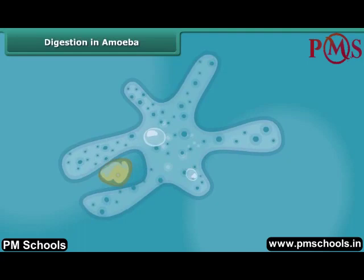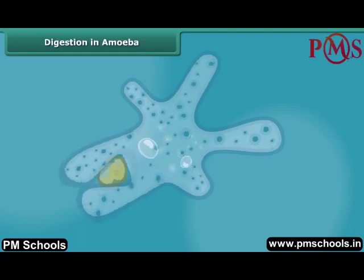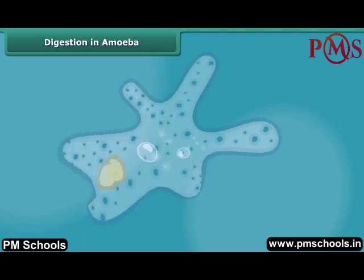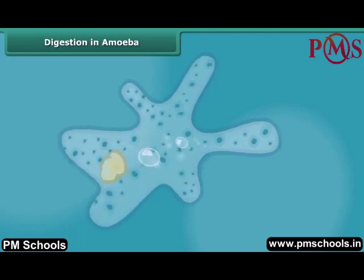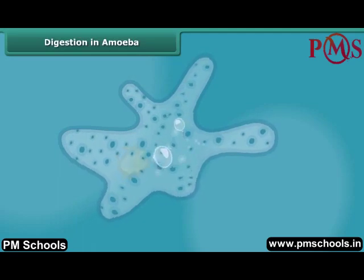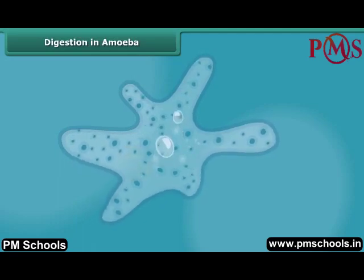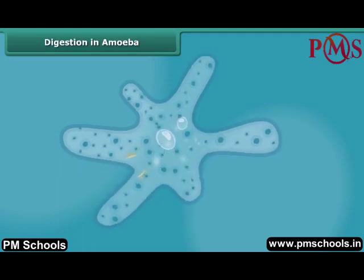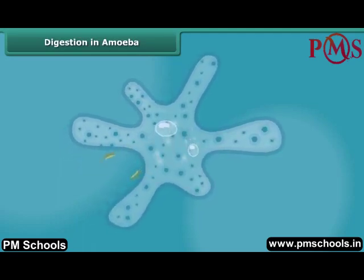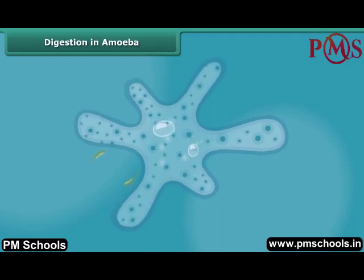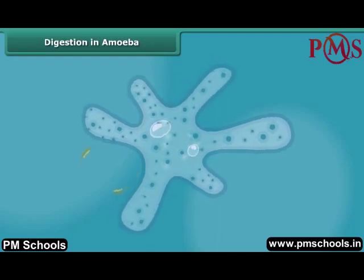The food becomes trapped in a food vacuole, and the digestive juices act on the food to break it down into simpler substances. Finally, the undigested food is expelled outside by the vacuole. From this, we can say all animals have the same basic process of digestion.